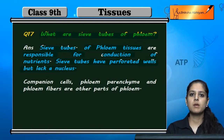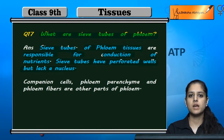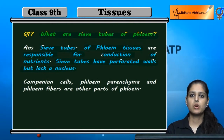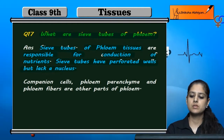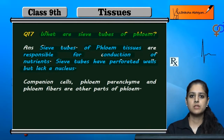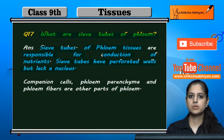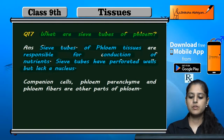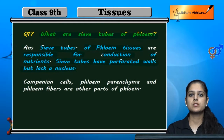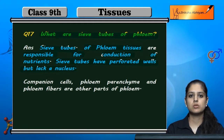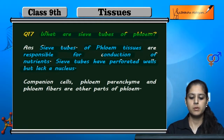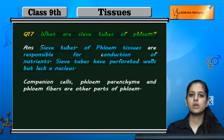Phloem's work is to give nutrients to the rest of the parts. Leaves create food materials, and phloem tissue transports these to other parts of the plant — the sieve tubes help with this transport. The sieve tubes have perforated walls and they do not have a nucleus.